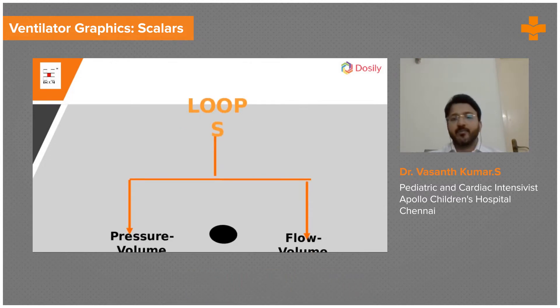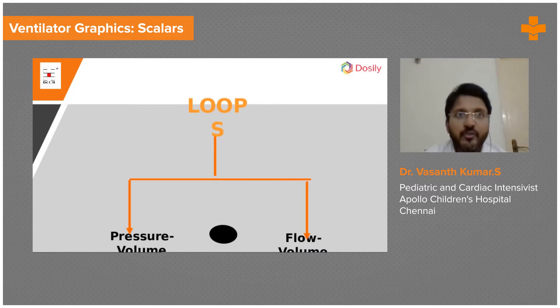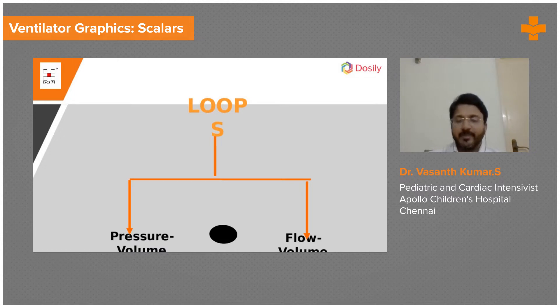Next is the loop. A loop is comparing the components of scalars with each other. If you compare pressure with volume, it becomes a pressure-volume loop. When you compare flow with volume, it becomes a flow-volume loop.